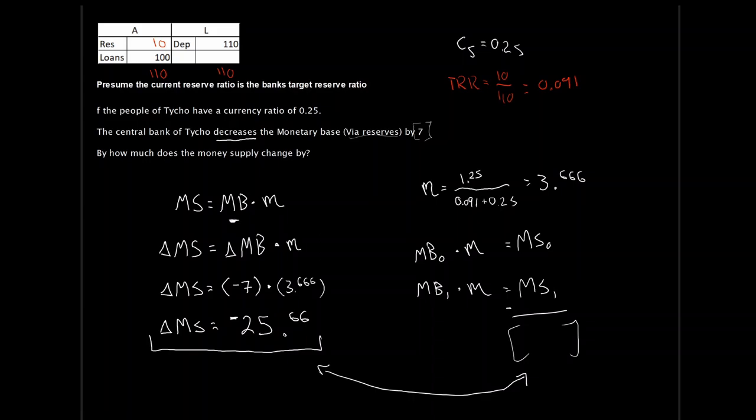That concludes our overview of examples on the whole money creation and money destruction process. Hopefully that was helpful in navigating what's changing, how to work through it, what goes where, and the manipulations of these formulas. If you have any questions, or if it looks like a math mistake was made, please feel free to post in the comments below, on the D2L Frequently Asked Questions page, or send an email. Thanks — hopefully that was helpful. Until next time.